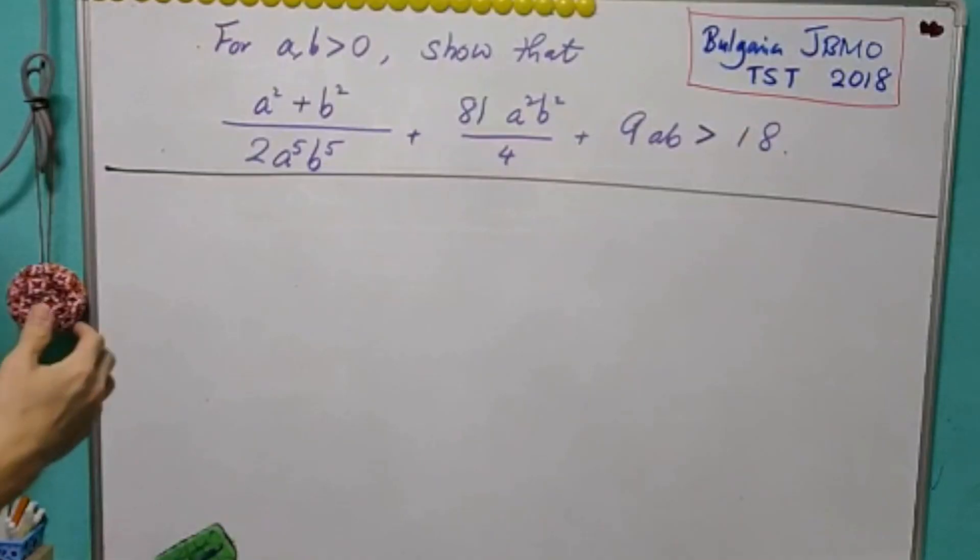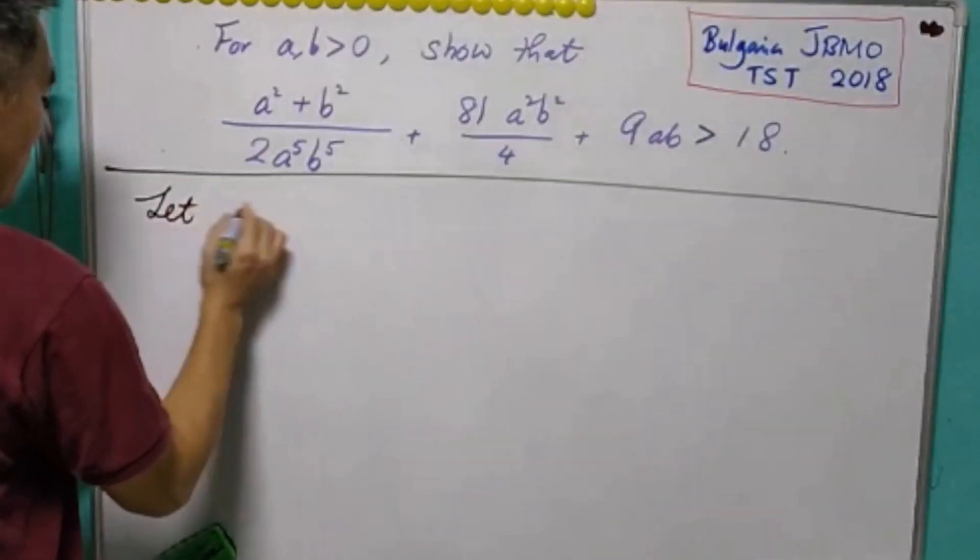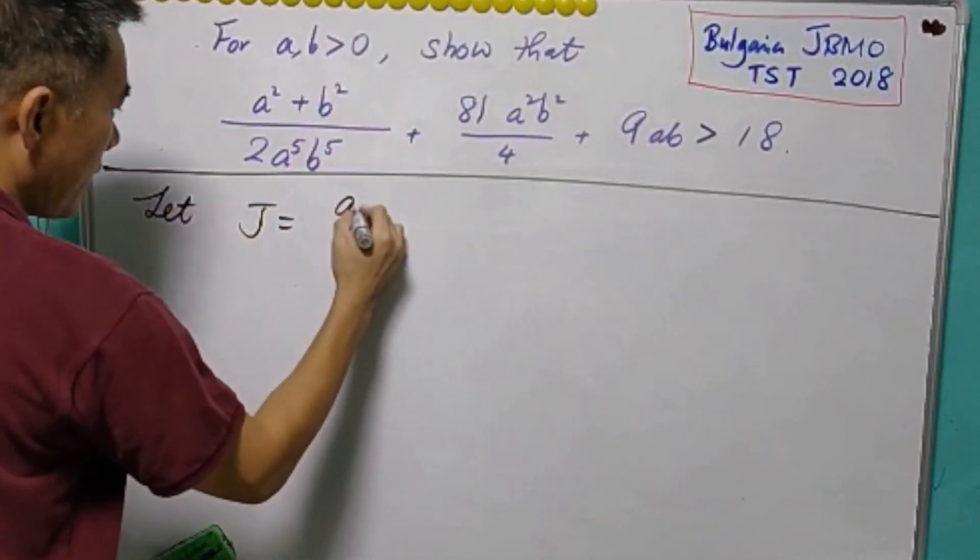In our experience solving, it is not difficult to see that we just need to use AM-GM inequality. So we will let J to be this expression.